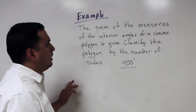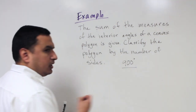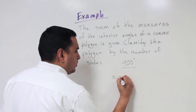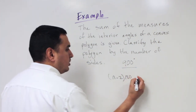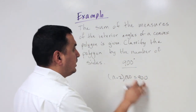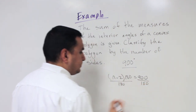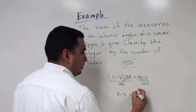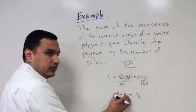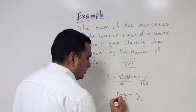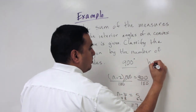Given that the sum of the interior angles of a convex polygon is 900°, classify the polygon by number of sides. Set (n−2) times 180 equal to 900. Divide both sides by 180 to get n−2 equals 5. Add 2 to both sides: n equals 7. Since it has 7 sides, the shape is a heptagon.